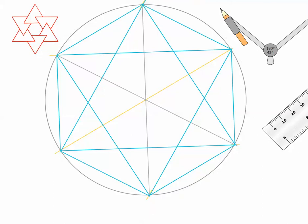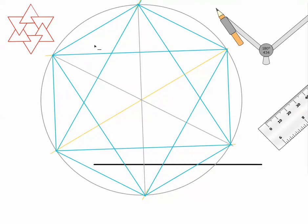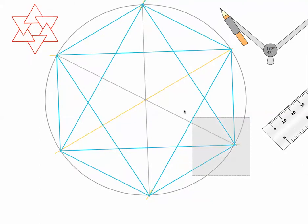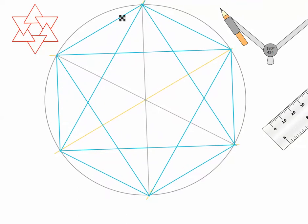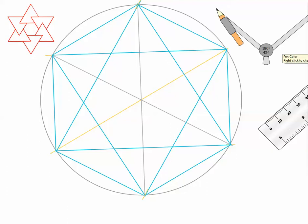All right, so now, what I'm going to do is, I'm going to darken in the lines that define my triangles.